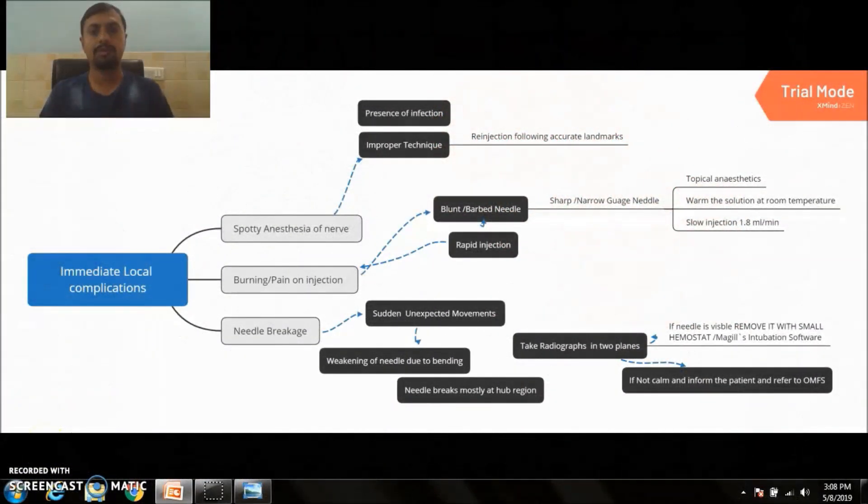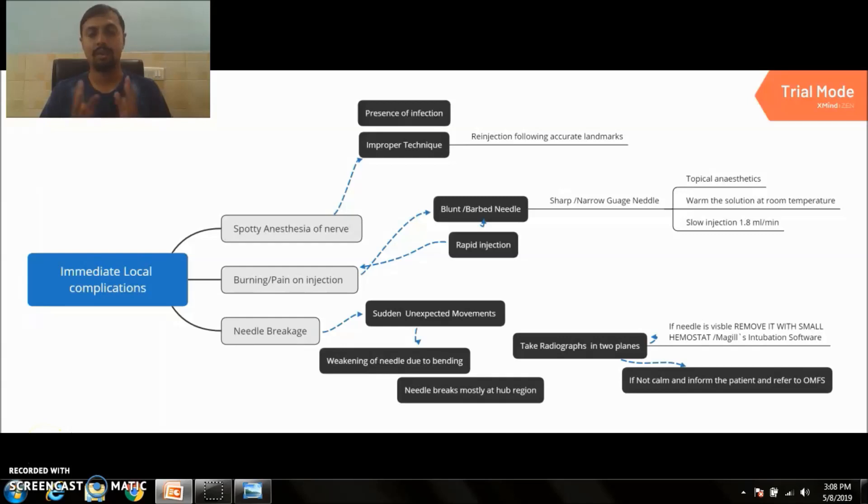We can see two types of complications associated with local anesthesia: local and systemic. Local complications are of two further types: immediate local and delayed local. Now we focus on immediate local complications.